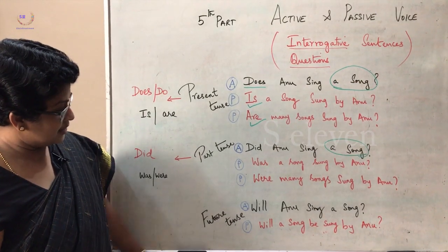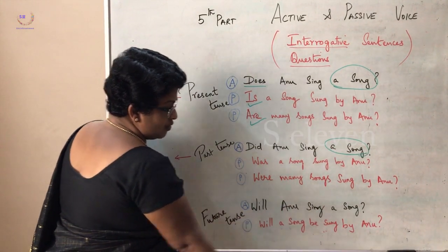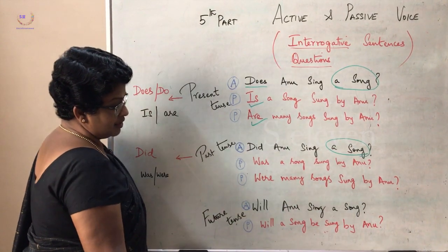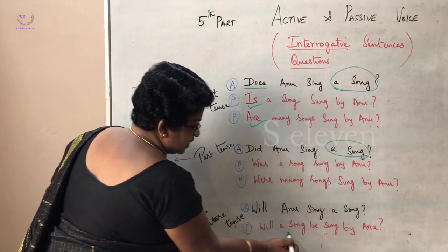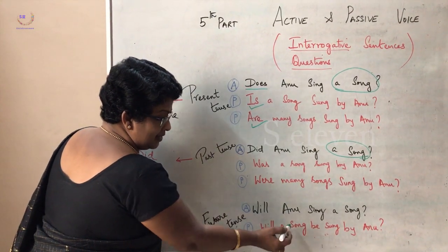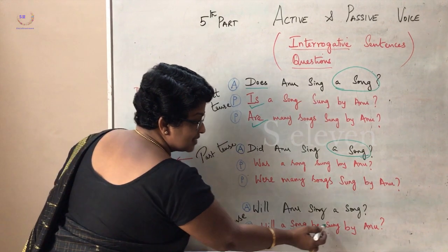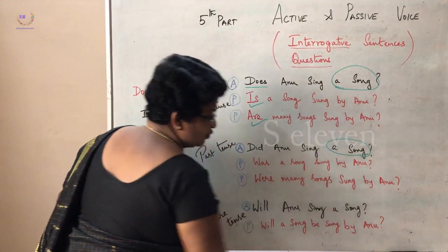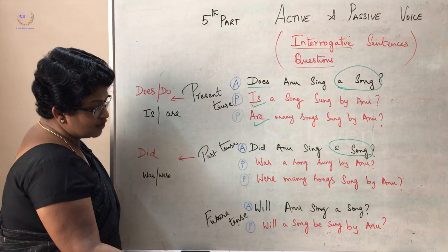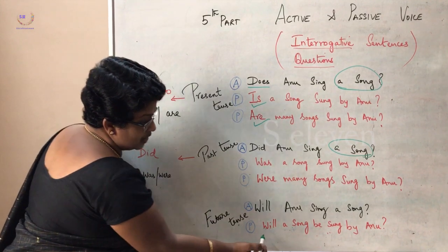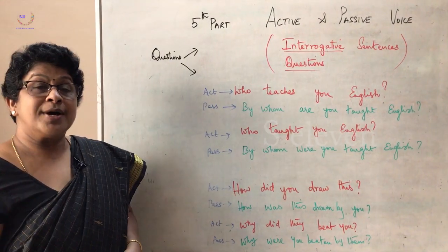Next, let's move to future tense. Will Anu sing a song? Bring the object forward: Will a song be sung by Anu? If it is many songs, just write: Will many songs be sung by Anu?